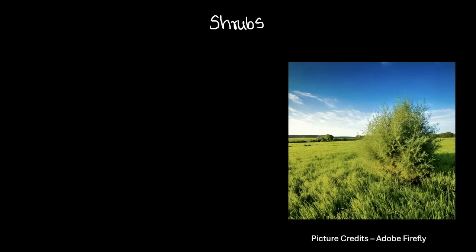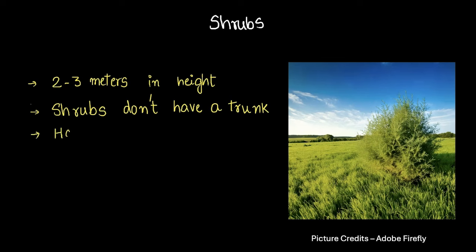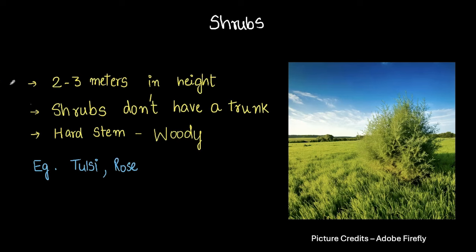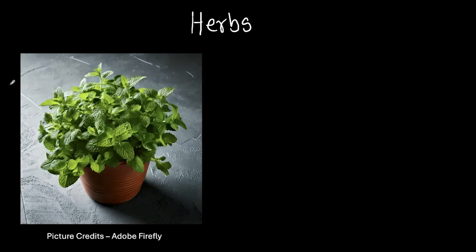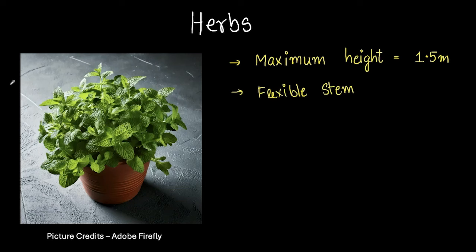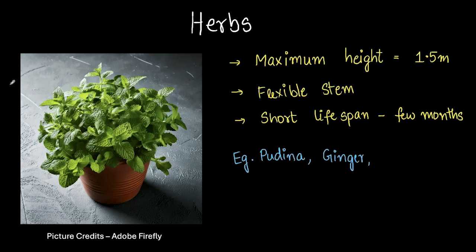Herbs are the smallest of the lot, with a maximum height of a meter and a half. They have flexible, softer stems — they don't have woody stems. They have a short lifespan, usually a few months, at the max a year or two. Examples are pudina, ginger, coriander, and carrot — all of those are herbs.